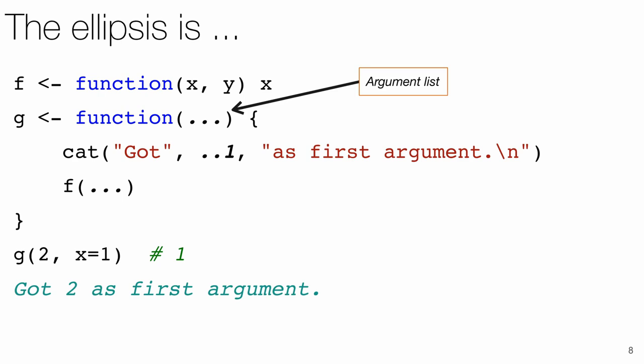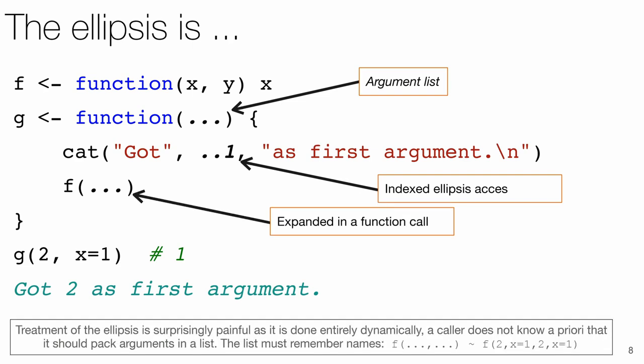So far, we saw the ellipsis in the position of a formal parameter to a function. Let's have a look at how it can be used in the body of the function. First, R provides special pi index accessors in the form of dot dot n symbols. These will simply read out the nth element of ellipsis, or throw an error if out of bounds. Second, ellipsis can be passed as an argument at a call site.